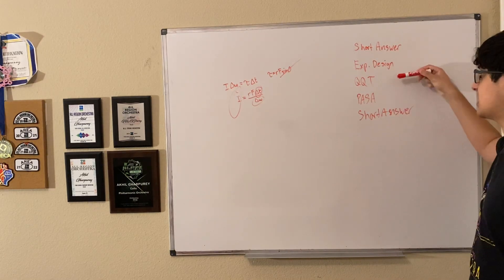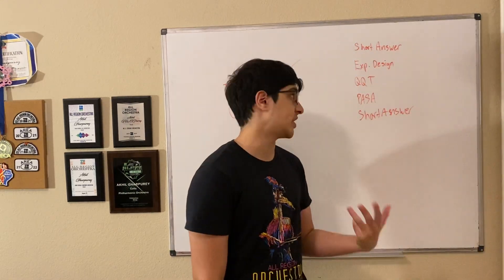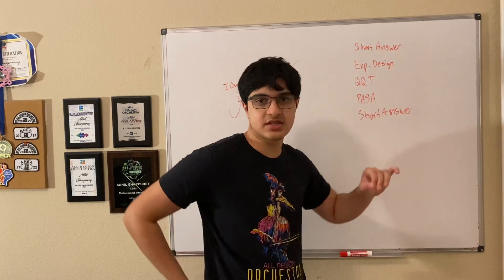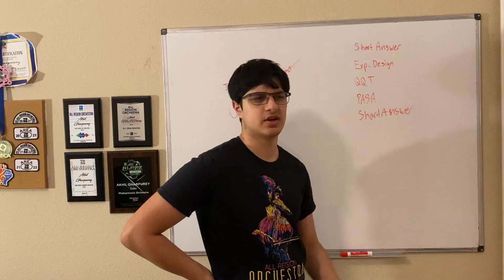So just go through those labs, look through the materials, look through the physics concepts they were examining, try to link them together. And I think you will be pretty well set to get at least 10 of the 12 points on the experimental design FRQ. Now let's move on to the next one, the quantitative qualitative translation one.